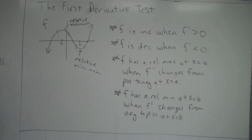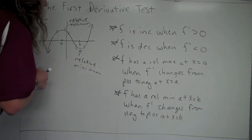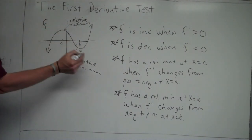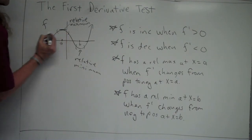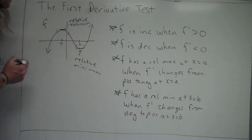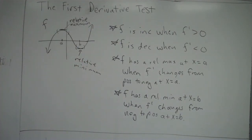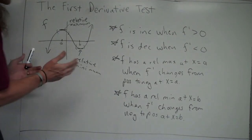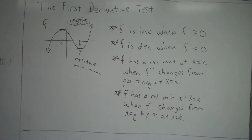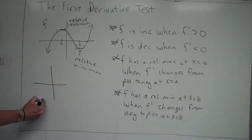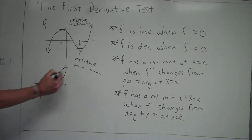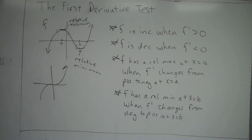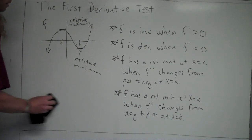Notice that at the relative maximum and relative minimum, the slope was zero. Whenever the derivative equals zero, that's called a critical value — a possible relative minimum or maximum. However, it's not always the case. For example, y = x³ has a slope of zero at the origin but continues increasing, so there's no relative minimum or max there. It's not always true that when the slope is zero, there's a relative extremum.